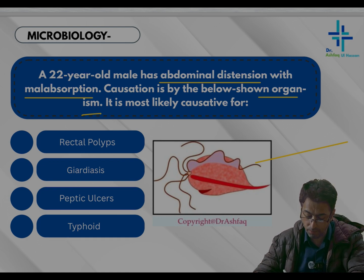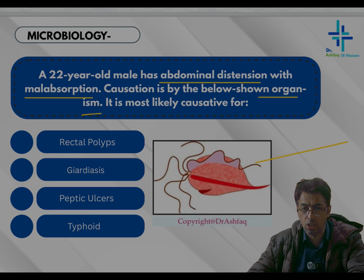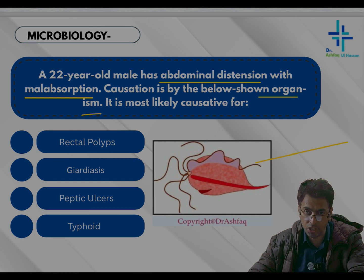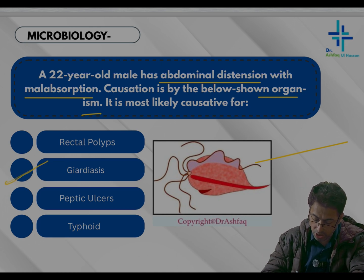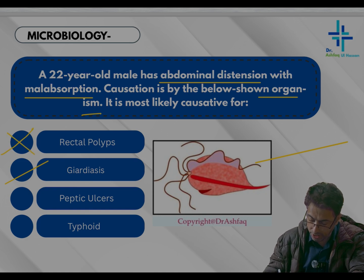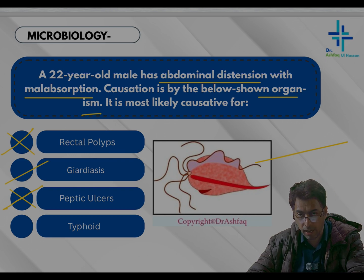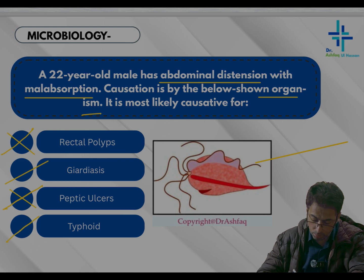The clues in the question are abdominal distension and malabsorption. Giardiasis is specifically known for causing malabsorption and abdominal distension as a result of gas distension. Rectal polyps are not a feature of Giardiasis. Peptic ulcer is not the answer — peptic ulcers in many cases involve Helicobacter pylori, and the shape does not resemble H. pylori. Typhoid involves Salmonella, which does not resemble this shape either.